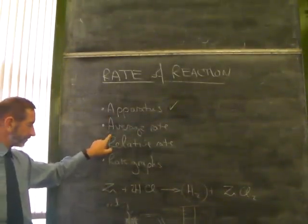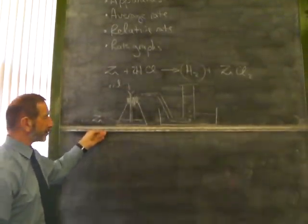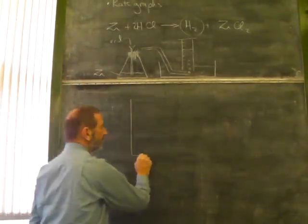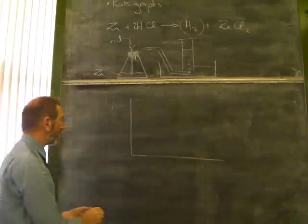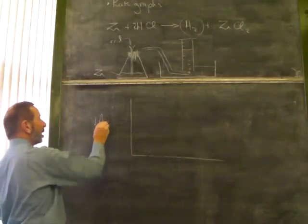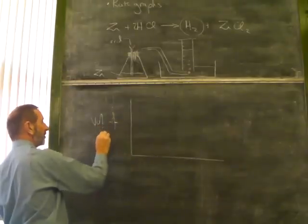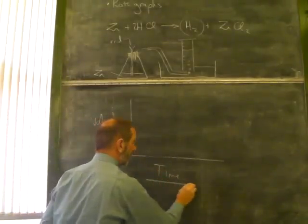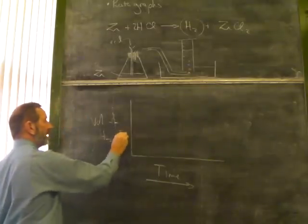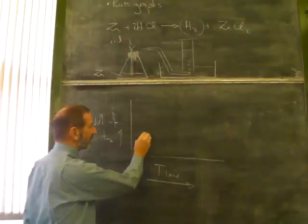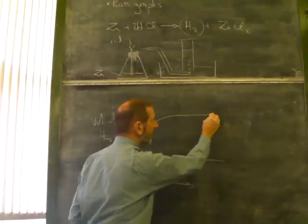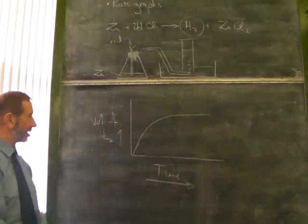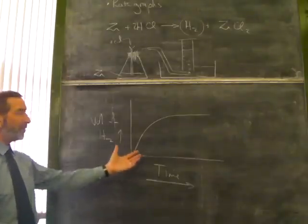Average rate. If we did this experiment, what would we find? Well, we would find that initially, at the start, the gas would come off very quickly. So if our vertical axis in this graph is volume of hydrogen, and we want to see how long it takes to collect the hydrogen gas, then what we'd find is that it came off rapidly to begin with, and it would gradually slow down until eventually it stopped being produced. Chemical reactions generally slow down like this. So the question is, how fast is the reaction?